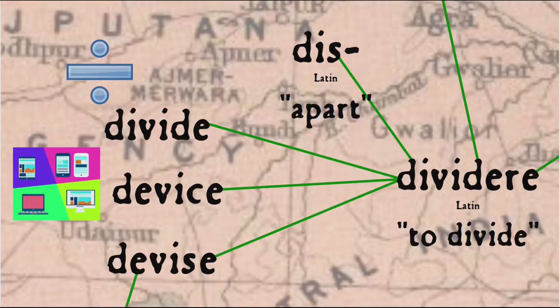The sense of devise comes about through the notion of 'to dispose in portions' or 'arrange a division,' and thus arrange, plan, contrive. And there's still an echo of the original sense in the expression 'to devise a will,' which brings us back to widows.